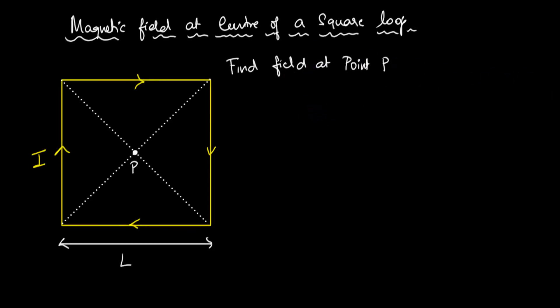Let's work out a simple example. We have been given a square loop, which I'm going to call ABCD, that carries a current I and has a side length L. Our goal is to calculate the magnetic field at this point P.